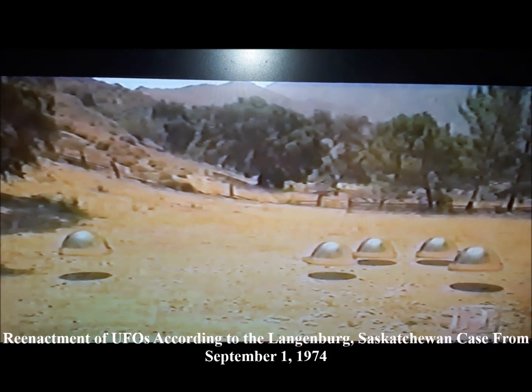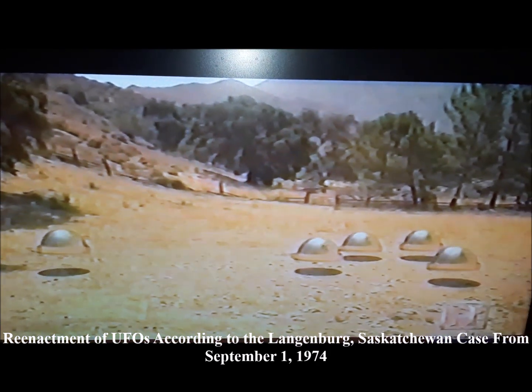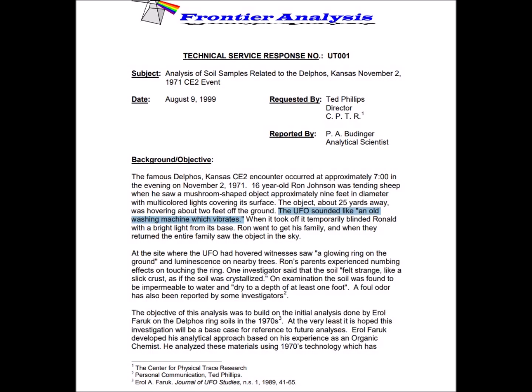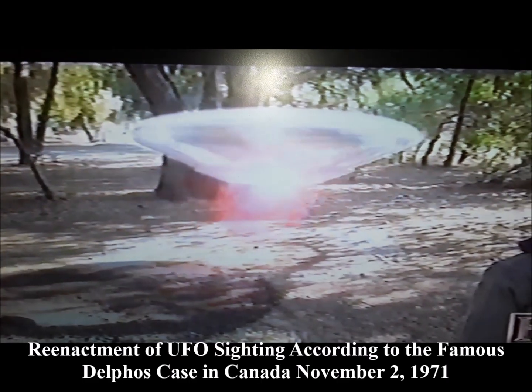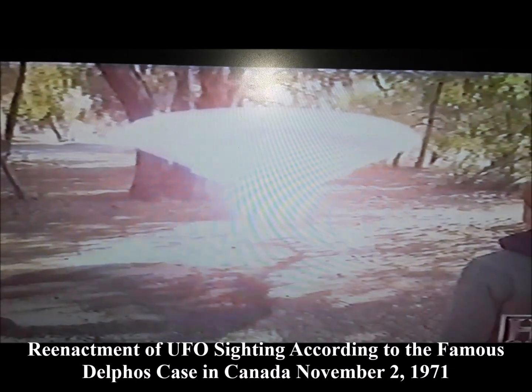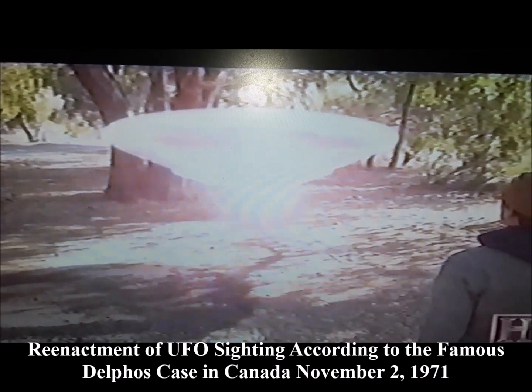Is this the reason why most UFOs have a disc or saucer shape which rotates rapidly during flight or hovering? The famous Delphos, Kansas UFO case from November 2nd, 1971 describes a six to eight foot diameter hovering UFO as having the sound of a washing machine that is spinning out of balance.